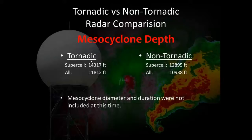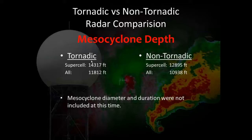For mesocyclone depth, this was also within 60 nautical miles for higher resolution. The measurement was from the lowest 0.5-degree scan where the mesocyclone was detected up to the top, without extrapolation between scans. Overall, tornadic cases were a little bit deeper than non-tornadic cases. Something for future work is looking more at mesocyclone diameter and duration, which Ron, Ray Wolf, Atkins, and others have examined in past papers.